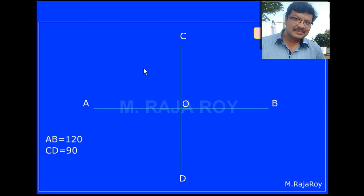In this video, I'll explain the arcs of circles method. In this problem, the major axis is given as 120 and the minor axis is given as 90.